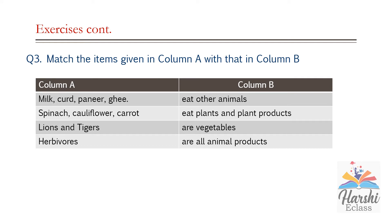Question number three: Match the items given in column A with column B. Milk, curd, paneer, and ghee are all animal products. Spinach, cauliflower, and carrot are vegetables. Lions and tigers eat other animals. Herbivores eat plants and plant products.